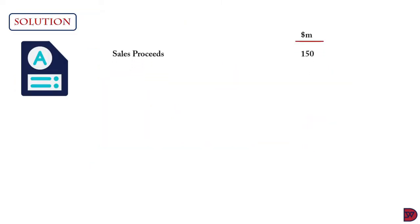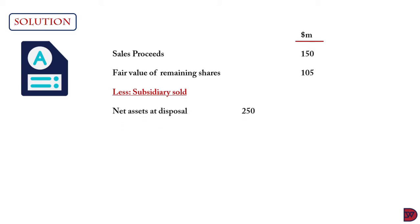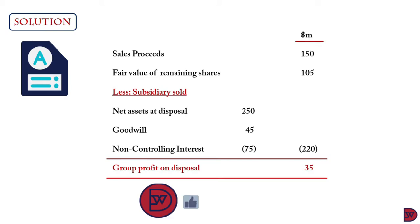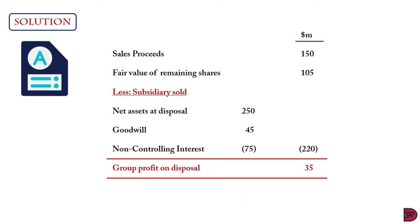For the solution, we start with the proceeds of the 50% share sold: 150 million dollars. We add the fair value of the remaining 40% shares: 105 million dollars. Then we less the value of the subsidiary, starting with the net assets of Morgan's at disposal: 250 million dollars, plus goodwill of 45 million dollars, less non-controlling interest at date of disposal of 75 million dollars, giving the value of the subsidiary as 220 million dollars. The net result is a group profit on disposal of 35 million dollars, because the sales proceeds and remaining shares exceed the value of the subsidiary.